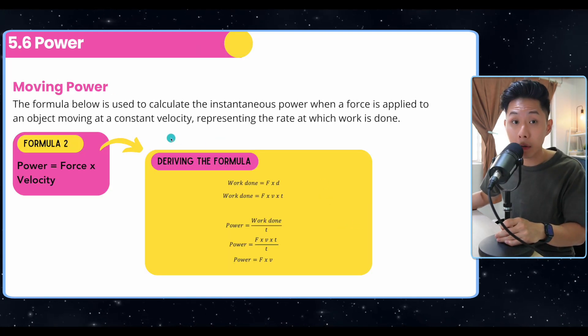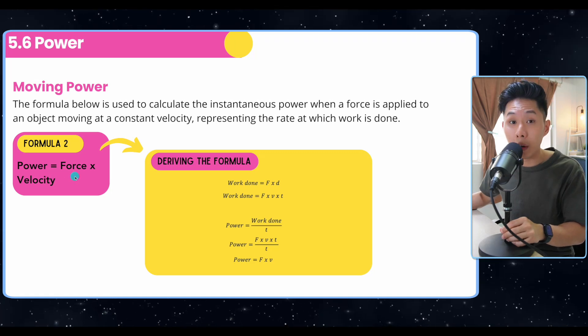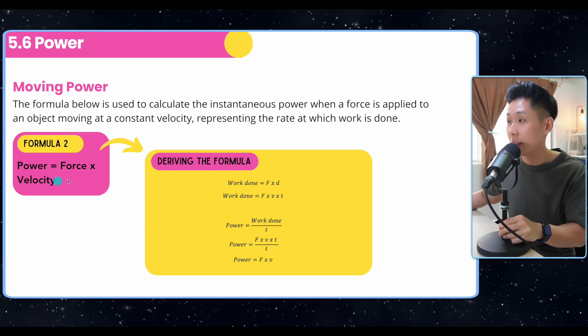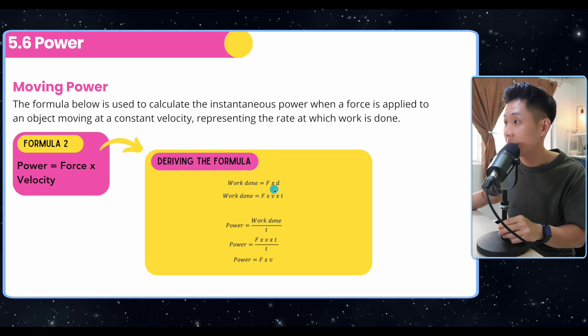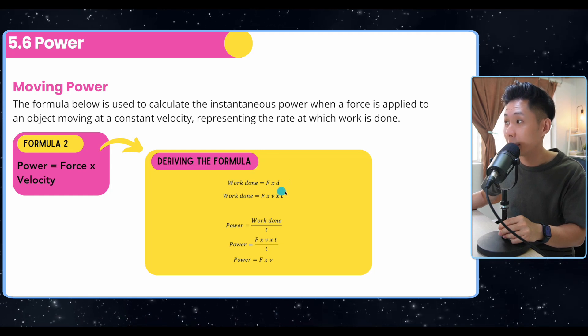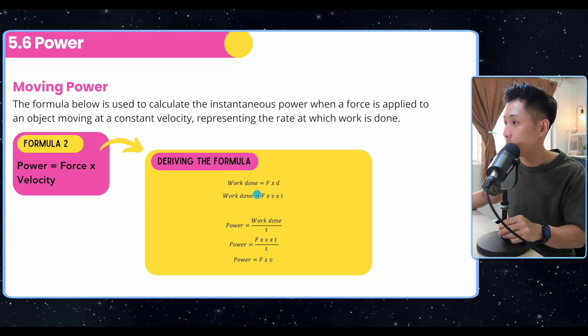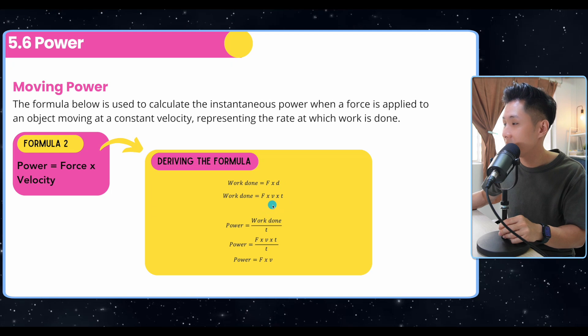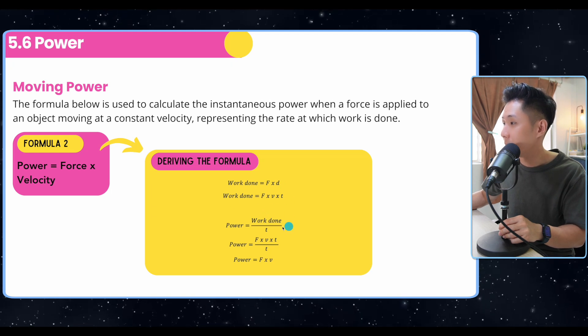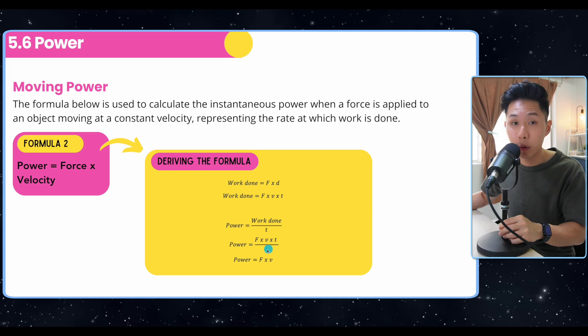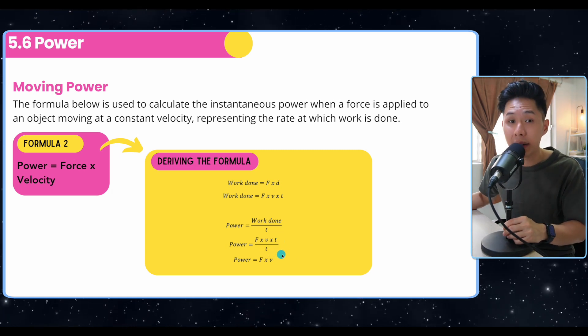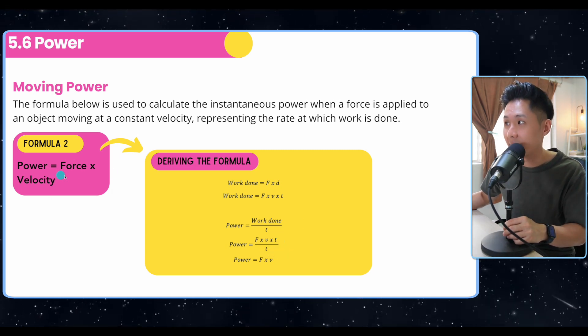There's another concept in power called moving power. The formula is power equal to force times velocity. We can derive the formula by using the work done formula, which is F times d. And we know that distance is equal to velocity times time. So we let work done be this term here. And then we substitute this value into the power formula, cancel the time out, and we would have found out that power is equal to F times velocity, which is stated here.